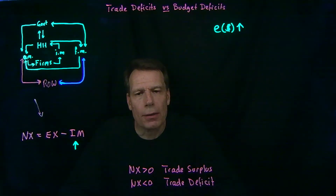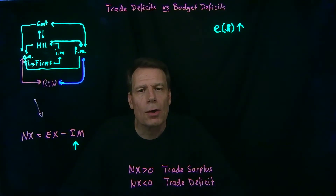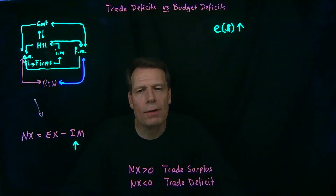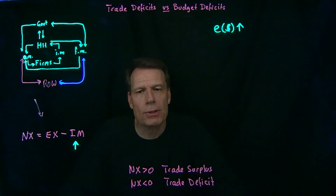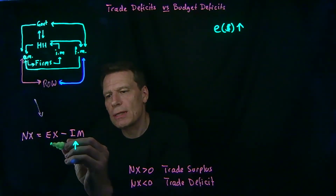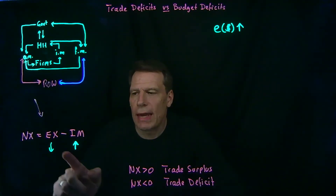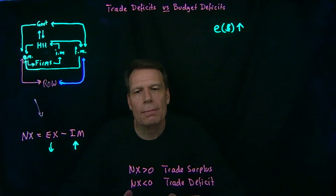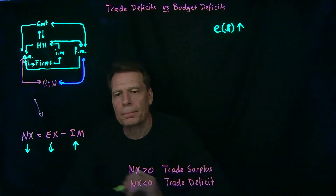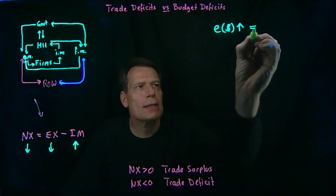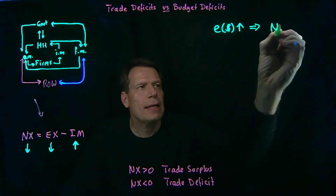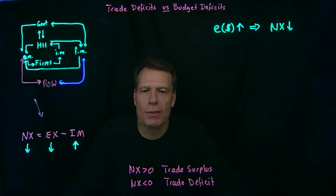When we see an appreciation of the dollar, then by definition, we see a depreciation of the euro against the dollar. So for Europeans who want to buy goods in the U.S., they can now buy fewer dollars for every euro that they spend. Goods in the U.S. are becoming more expensive for Europeans, meaning exports are becoming more expensive, so we'll see fewer of them. An increase in the exchange rate for the dollar will cause net exports to fall, or trade deficits to rise.